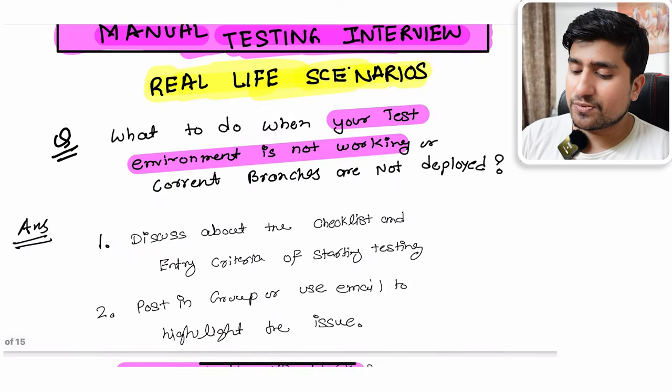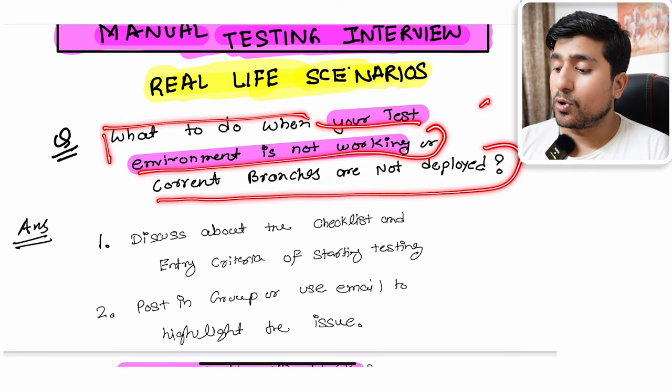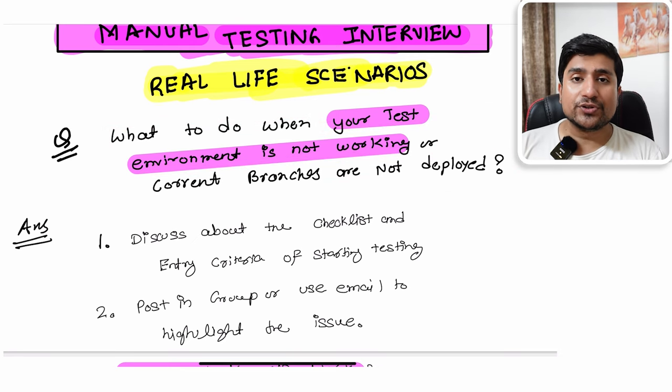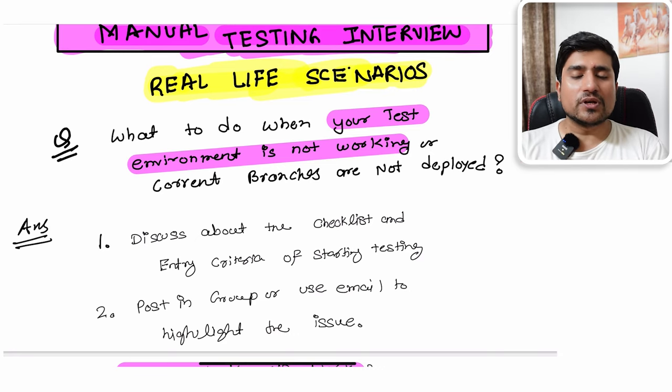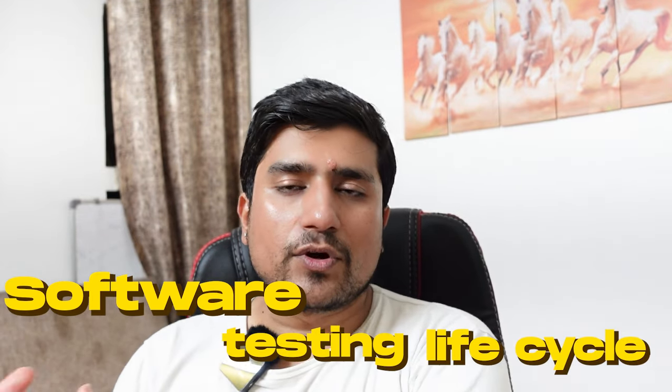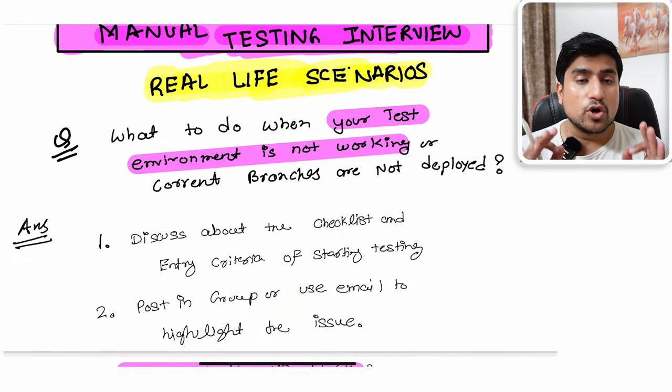The first question is: what do you do when your test environment is not working and current branches are not deployed? This is a really important scenario. In the software testing life cycle (STLC), there is a test environment setup stage. If that stage is not ready and the developer branches that should be deployed for you to start testing are not properly deployed, it's a very real-time scenario interviewers ask about.